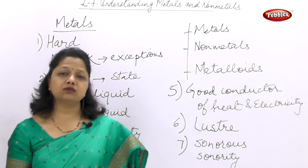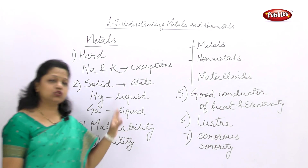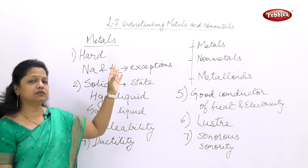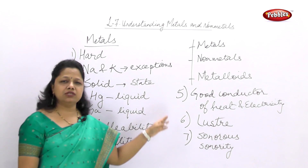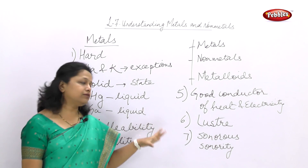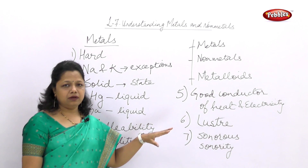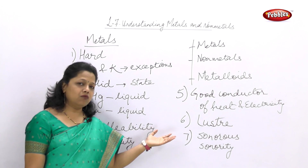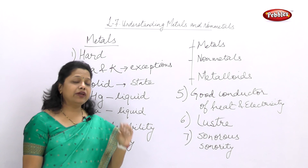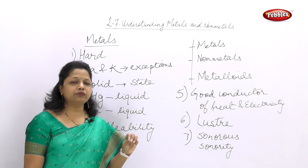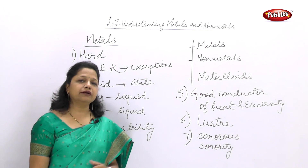These are the seven properties that identify metals. A substance which we call a metal must have some of these properties, and this is what makes metals and non-metals different. When we use the word non-metal, that means some properties may not match with metals — that is why there is a difference between metals and non-metals.